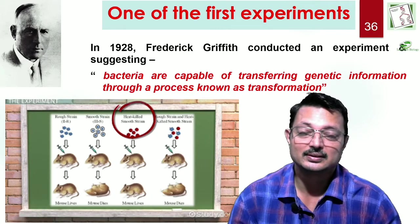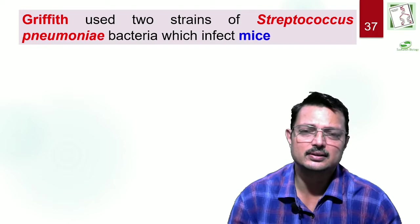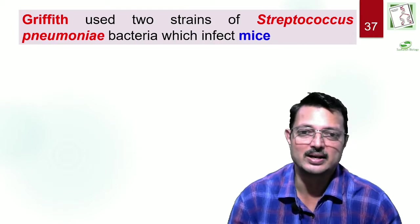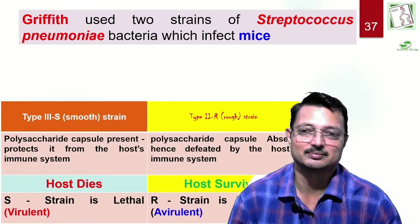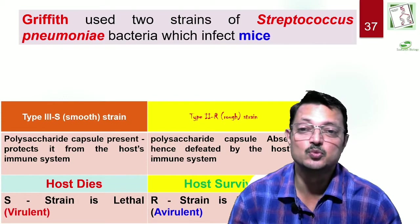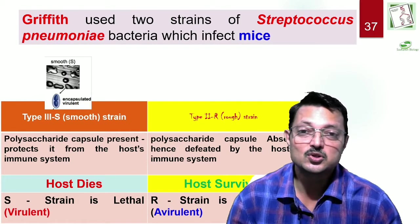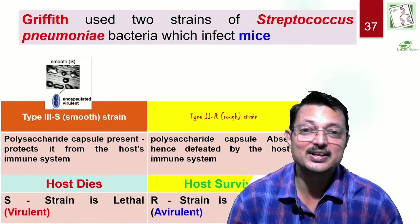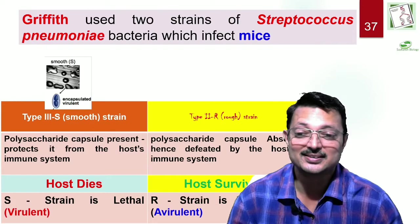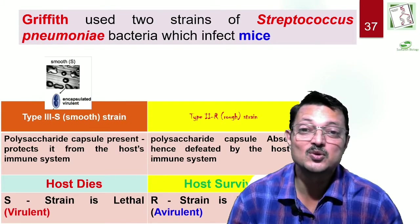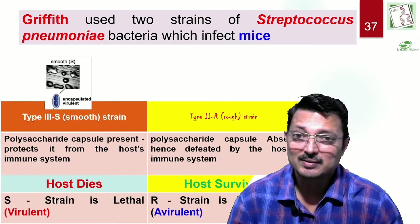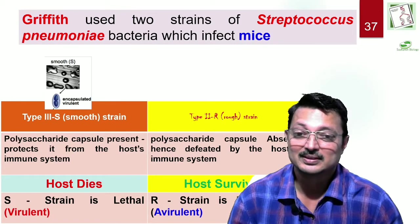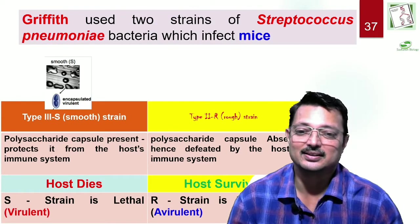How was it done? Griffith used two strains of Streptococcus pneumoniae which infect mice. The first was the Type 3S strain — the smooth strain — because it has a polysaccharide coat. This coat protects the bacteria from the host's immune system, allowing it to escape detection, cause disease, and make the mice die. The second was the Type 2R rough strain, in which the polysaccharide coat is absent.